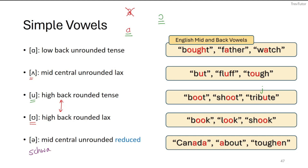The schwa is a very special sound. It appears in many places — pretty much whenever we have an unstressed syllable, we hear a schwa. It is the mid central unrounded reduced vowel; we don't call it lax or tense, we call it reduced. In words like 'Canada,' 'about,' and 'toughen,' certain vowels make a schwa because those syllables are unstressed — 'CAN-ada,' 'a-BOUT,' 'TOUGH-en.'